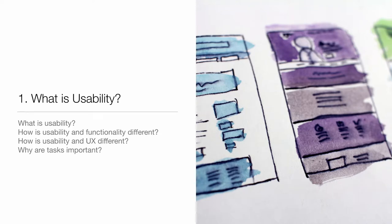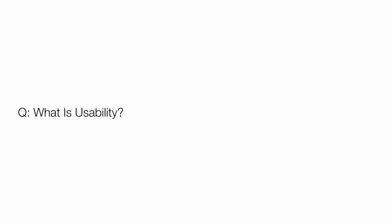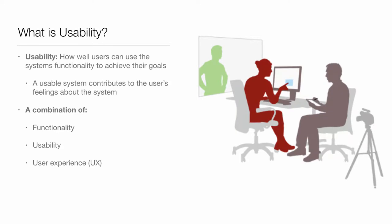So let's get started on the most basic topic: what is usability? We're asking what it is, how is it different to functionality, how is usability different to user experience, and why are tasks important in directing user experience? Usability is how well users can use the system to achieve their goals. A useful system contributes to users' overall feeling — we enjoy things that work well. If the system really helps us achieve our goals, then it's great, we love it.